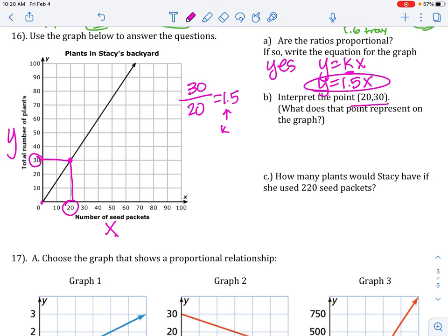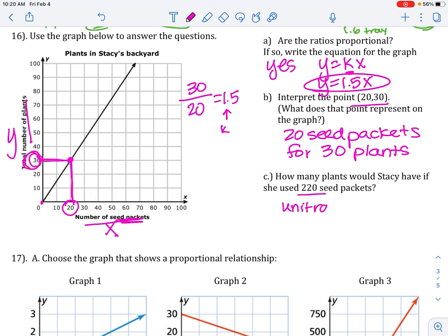What does the point 20, 30 represent? 20 seed packets, 30 plants. And this is actually the point we use for the unit rate. Now, if you said 30 plants will come from 20 seed packets, that's absolutely fine. Either way. C. How many plants would Stacey have if she used 220 seed packets? So, what you do is you take your unit rate and you multiply that by 220. So, unit rate times 220 is 330. So, that's how many plants she would have.